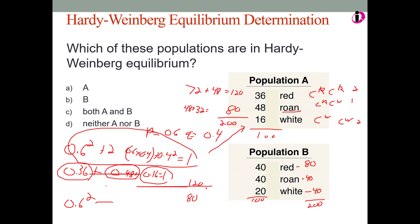Now, notice, we predict if evolution is not happening in population B for this gene, then there should be 36% red horses. But, in fact, we see 40%. We predict there should be, if no evolution is happening, 48% roan horses. But, in fact, we see 40%. We predict there should be 16% white horses, but, in fact, there are 20%. So, this population, population B, is not in Hardy-Weinberg equilibrium.